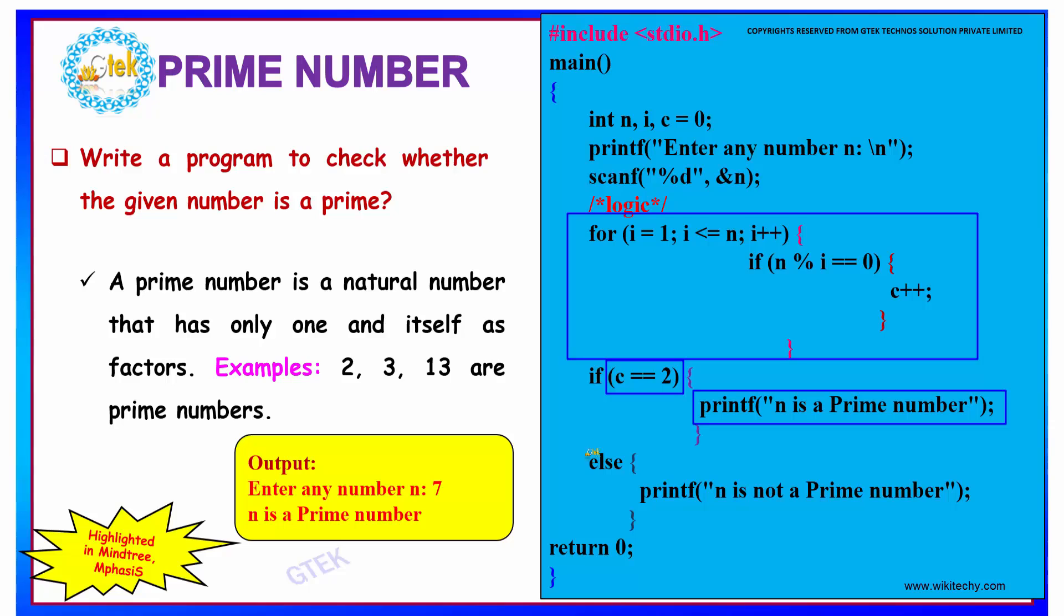Else, if c has been incremented more than twice, that indicates the number is not a prime number.